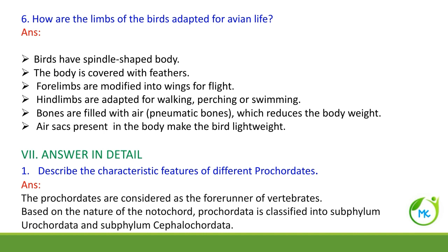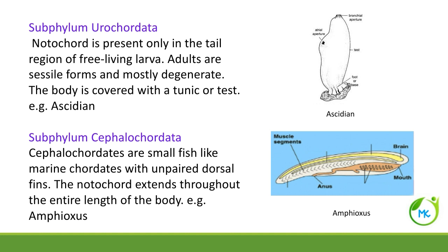Describe the characteristic features of prochordates. Prochordates are the forerunners of vertebrates. Based on the nature of the notochord, they are divided into Urochordata and Cephalochordata. In subphylum Urochordata, 'uro' refers to tail — the notochord is present in the tail region. The adult form is sessile, mostly degenerate, and the body is covered by a tunic or test. Cephalochordata are small fish-like marine chordates with unpaired dorsal fins, and the notochord extends throughout the entire length of the body. Example: Amphioxus.